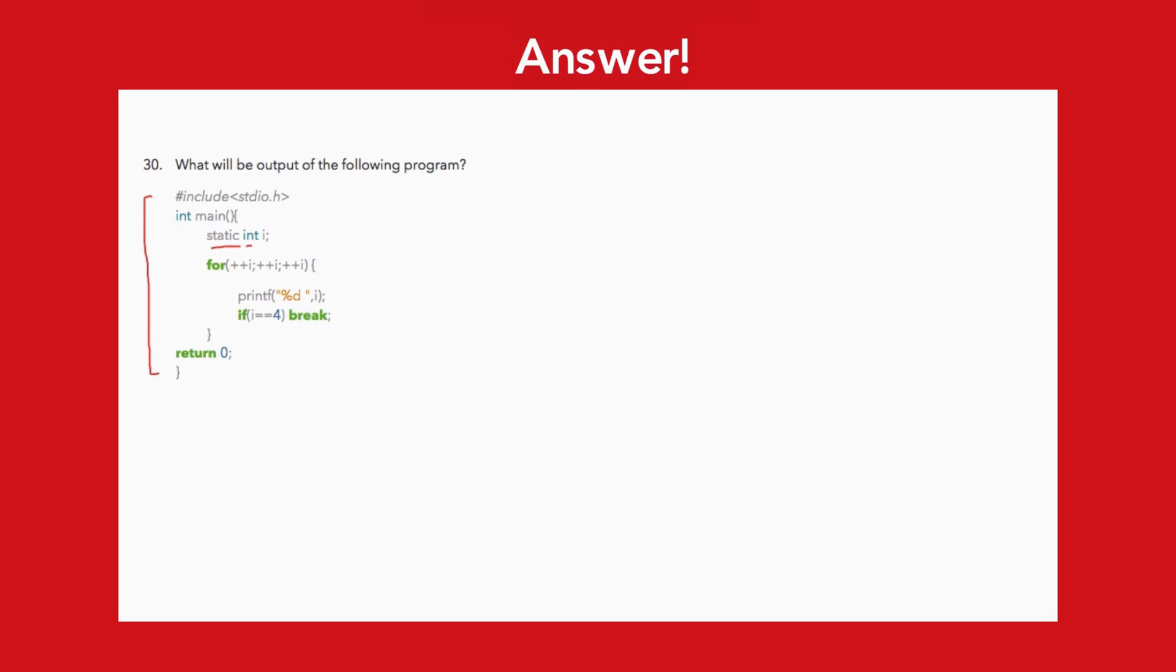So we have a static integer i. We know that for static variables, values are initialized to 0. Hence i is equal to 0.